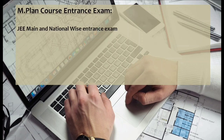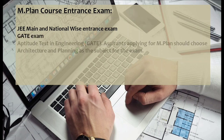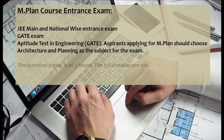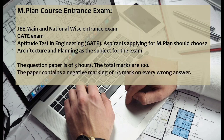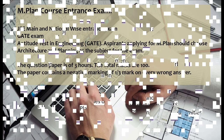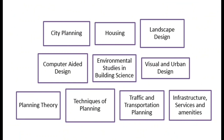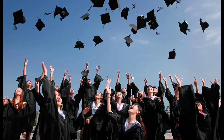Entrance exams: applicants have to qualify JEE Main and the national level entrance exam, which is meant for individuals anticipating to pursue architecture and planning courses. The candidate also has to qualify the GATE exam for getting admission in the opted college. Highlights of this exam: the question paper is of three hours, there are 65 multiple choice and numerical type questions, the total marks are 100, and the paper contains a negative marking of one-third mark on every wrong answer. This course widely covers city planning, computer-aided design, planning theory and techniques, traffic and transportation planning, environmental studies, building design, visual and urban design, landscape design, housing, and infrastructure services.